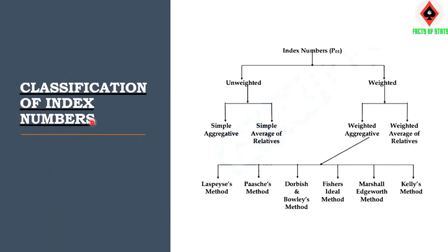Classification of index numbers: Index numbers have two major types. First, unweighted index numbers — including simple aggregative and simple average of relatives. Second, weighted index numbers — including weighted aggregative and weighted average of relatives. Under weighted aggregative, the methods are: Laspeyres, Paasche, Fisher Ideal Index, Marshall-Edgeworth, and Kellys method — six methods in total.